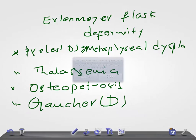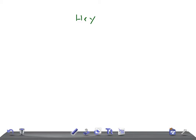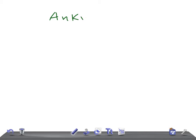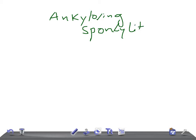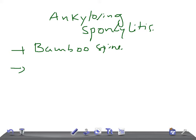Hey guys, welcome back. This is a quick radiology talk, and today I'm going to talk about the radiological findings and signs of ankylosing spondylitis. In your exam, if they mention bamboo spine, think of this condition. You also see what is called the Romanus sign, also known as the shiny corner sign.